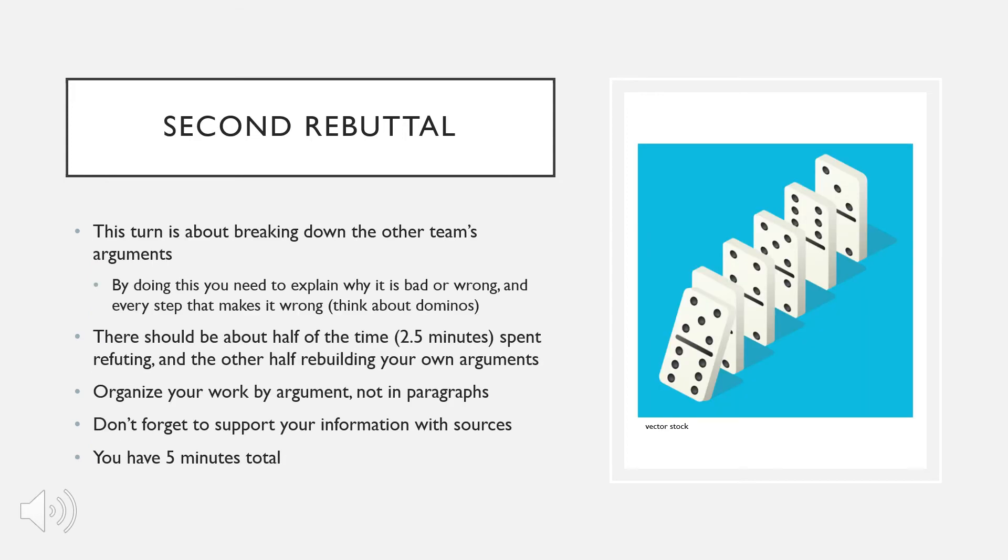The third team member to step out is the second rebuttal. This turn is mostly about knocking down the other team's argument and explaining why they are not sufficient reasoning for their position. You are going to rebuttal their ideas and explain why their examples and evidences are not correct. You need to explain why it's bad or wrong and think about dominoes.